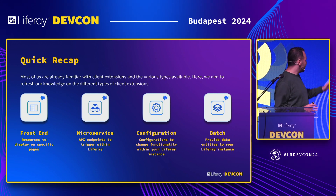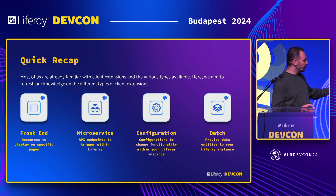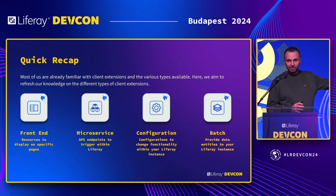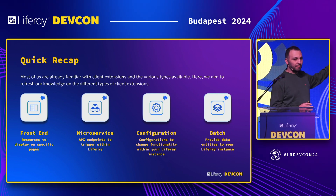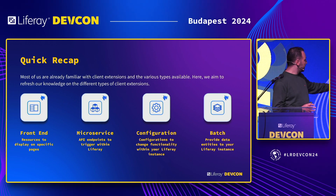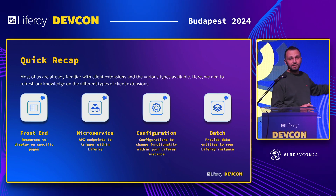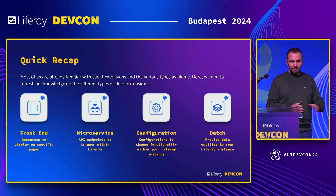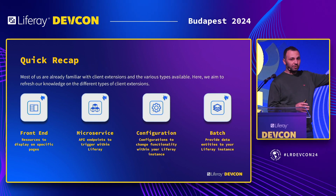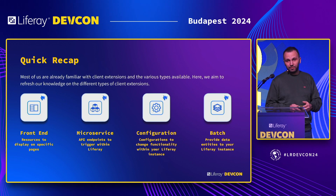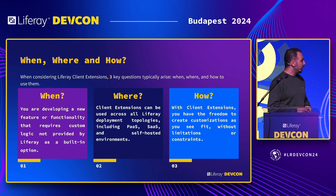Just a quick recap — we have four types: UI, microservice, configuration, and batch. Anything that renders in the browser is a UI. If I'm doing logic at the back end, that's a microservice. If I'm doing configuration for Liferay, that's configuration. And batch is used to create definitions or patch entries within Liferay.